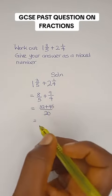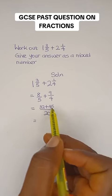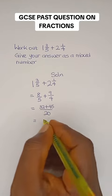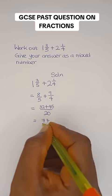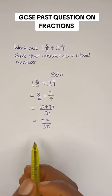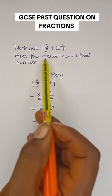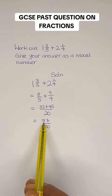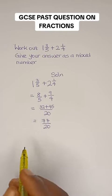The next thing we need to do is add the numerators. 32 plus 45 is 77. So we have 77/20. Now remember, we are told to leave our answer as a mixed number. This is an improper fraction, so we have to convert it to a mixed number.